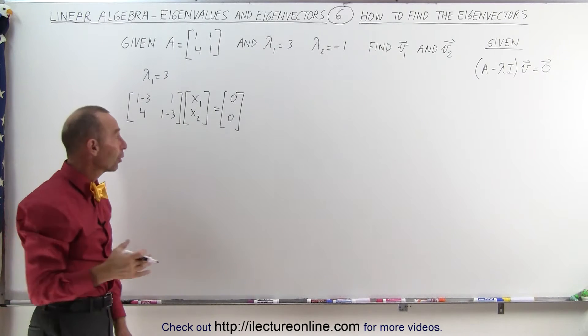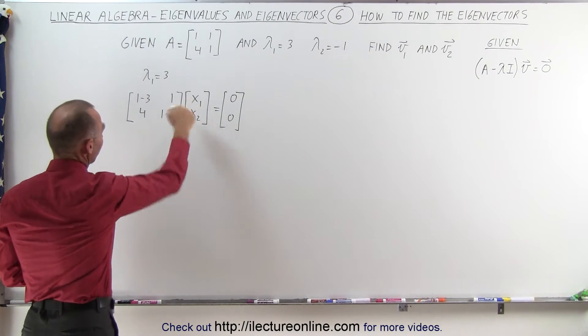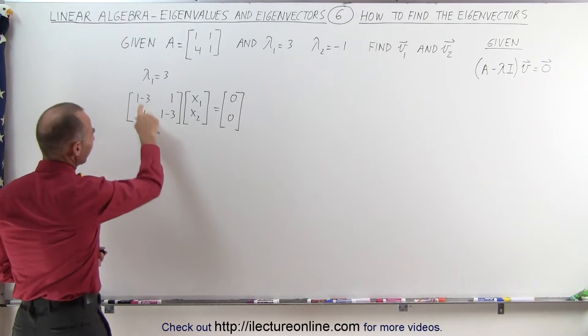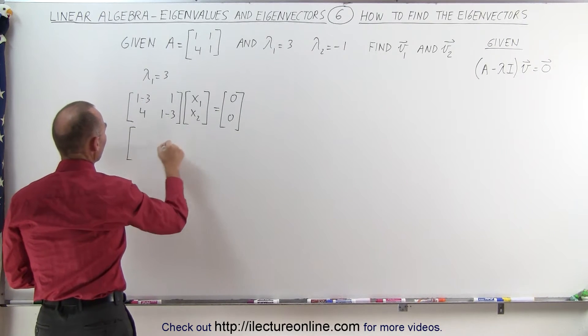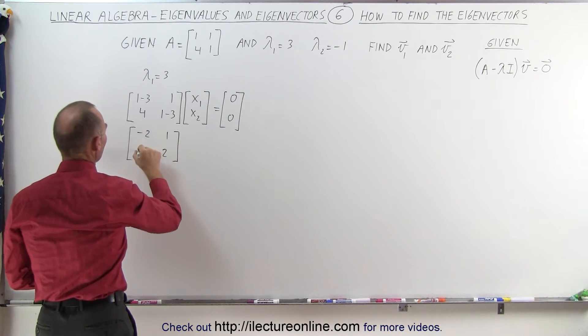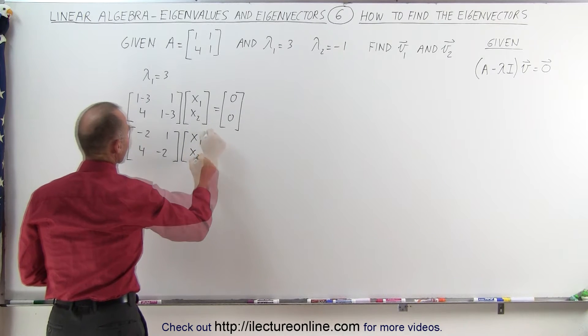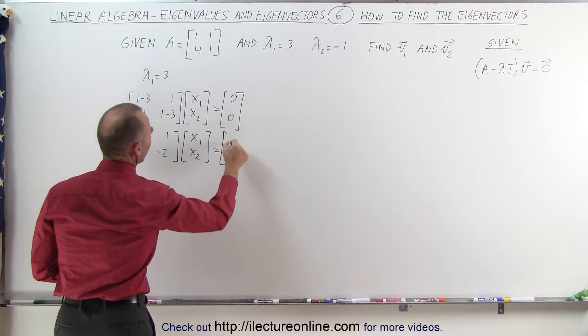Now this is a system of linear equations, and we have to solve for x1 and x2. Let's simplify this a little bit, so we can write this instead like this: minus 2, 1 and 4, minus 2, times x1, x2 equals 0, 0.